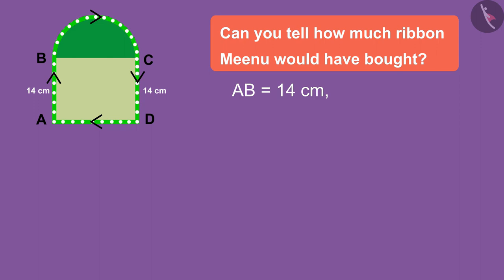Perfect! The length of the ribbon applied to it will be half of the circumference of the circle on the side of the square. Can you tell what will be the radius of the circle formed on this side of the square?